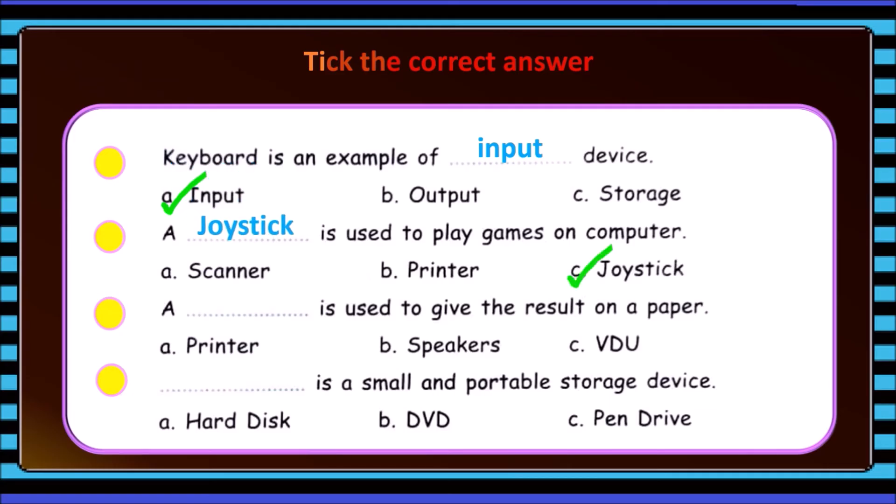A dash is used to give the result on a paper: printer, speakers, VDU. Printer. Correct.